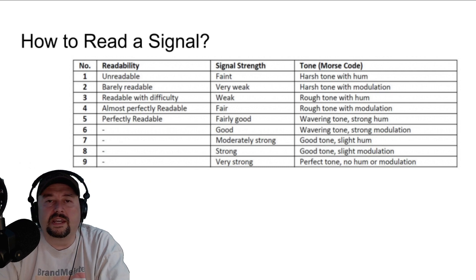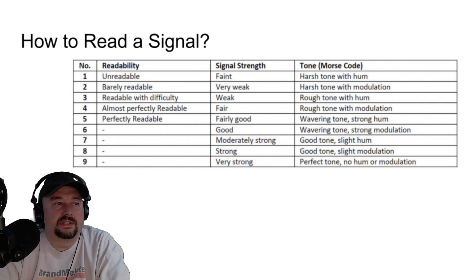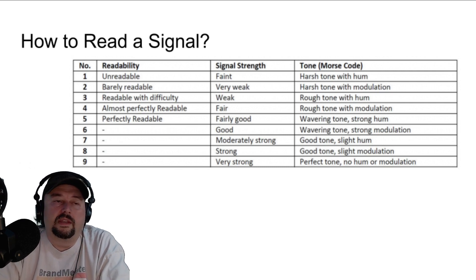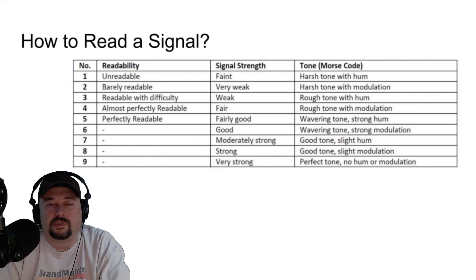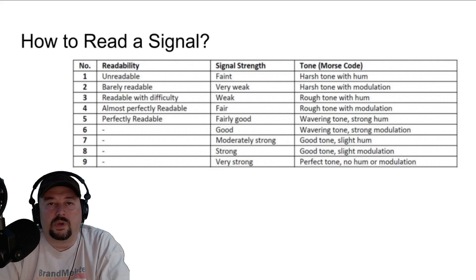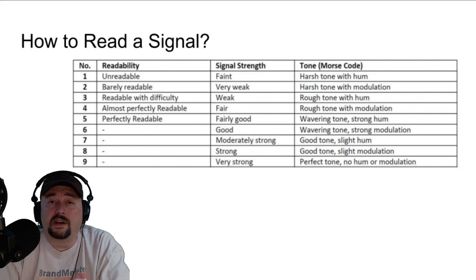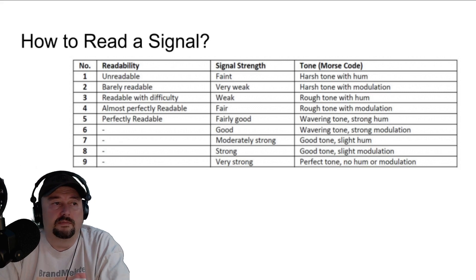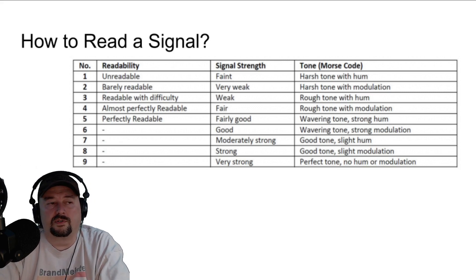The second part is Signal Strength, and that is on a 9-point scale going from 1, which is faint, to very weak, to weak, to fair, to fairly good, to good, to moderately strong, strong, or very strong.